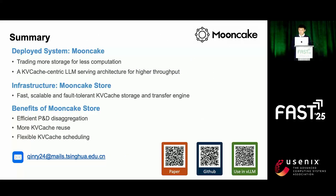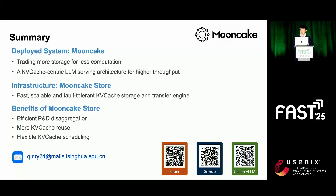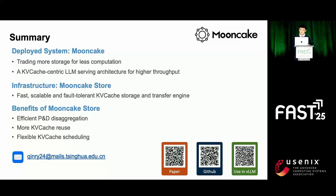In summary, we propose trading more storage for less computation to reduce the cost of large-scale, long-context serving for Kimi. Based on this, we built Mooncake, a KV cache-centric serving architecture, which saves more than half of the costs in our real-world deployments. The core infrastructure is Mooncake Store, which provides a fast, scalable, and fault-tolerant KV cache storage and transfer engine. Based on Mooncake Store, Mooncake implements efficient prefill-decode disaggregation, large KV cache storage, and flexible KV cache scheduling, significantly improving LLM serving throughput while ensuring real-time responses. We welcome you to check out our paper and GitHub repo for more details. Thank you for listening.